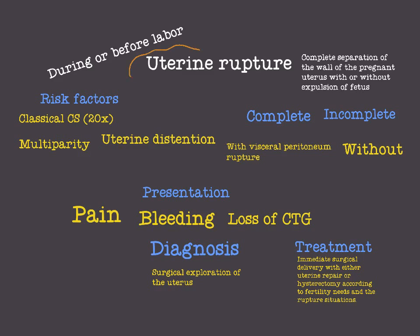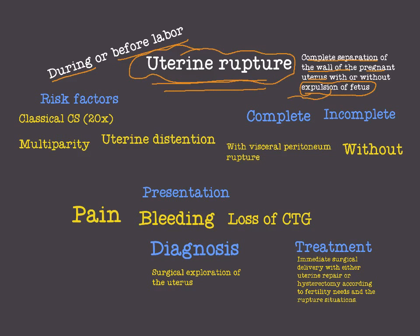Now let's move to the last condition responsible for antepartum hemorrhage: uterine rupture. Uterine rupture is a rare but important and dangerous condition. It may occur during or before labor. Uterine rupture is defined as complete separation of the wall of the pregnant uterus, which may or may not be associated with expulsion of the fetus or fetal parts. We divide it into complete uterine rupture, where the visceral peritoneum also ruptures, and incomplete uterine rupture, where the visceral peritoneum is preserved.